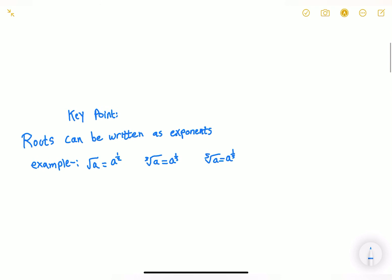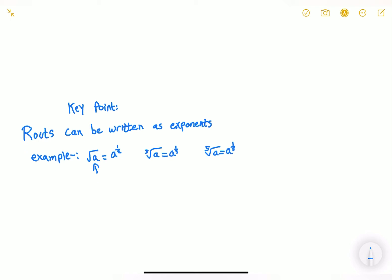So I'm gonna talk first about a key point: roots can be written as exponents. For example, the square root of a can be written as a to the power of 1/2, the cube root of a can be written as a to the power of 1/3, and the 5th root of a can be written as a to the exponent of 1/5. So now we understand that roots can be transformed into exponents.